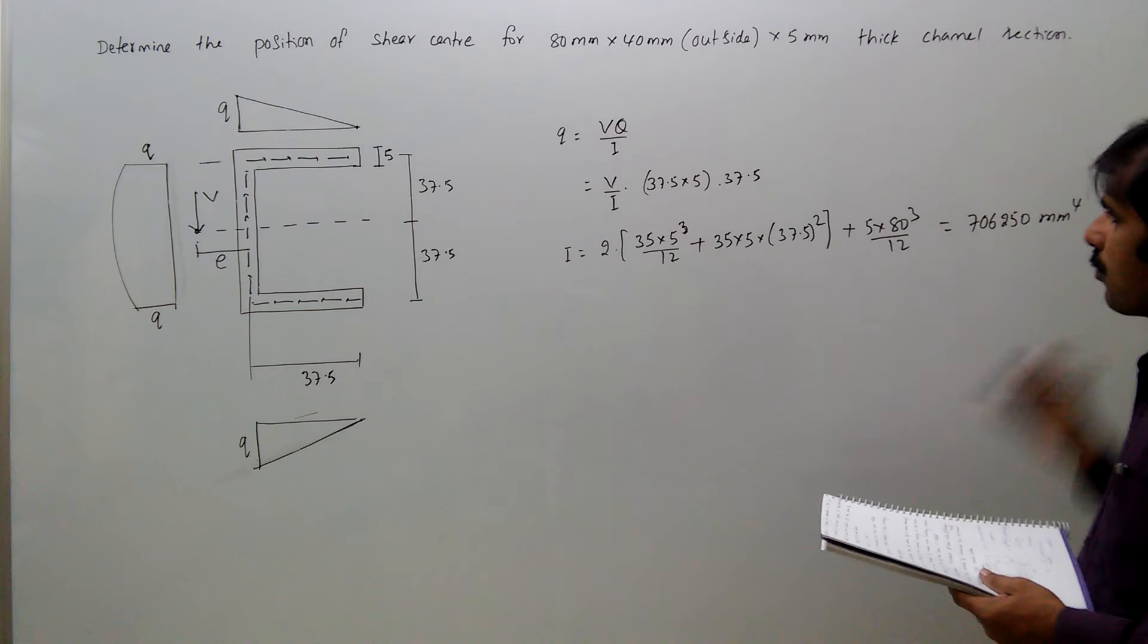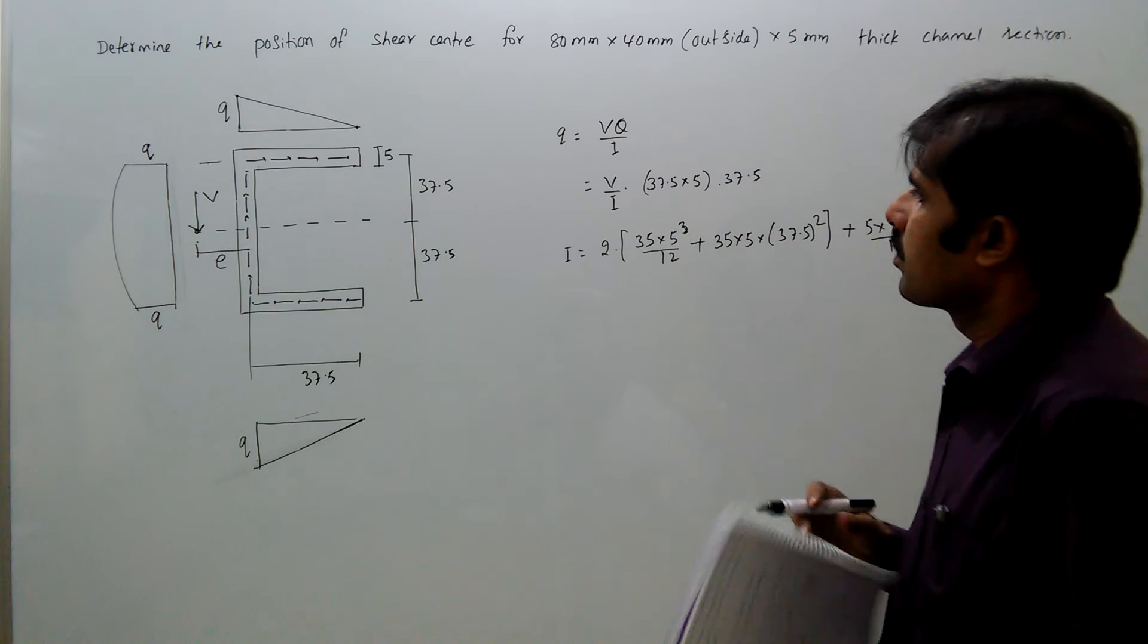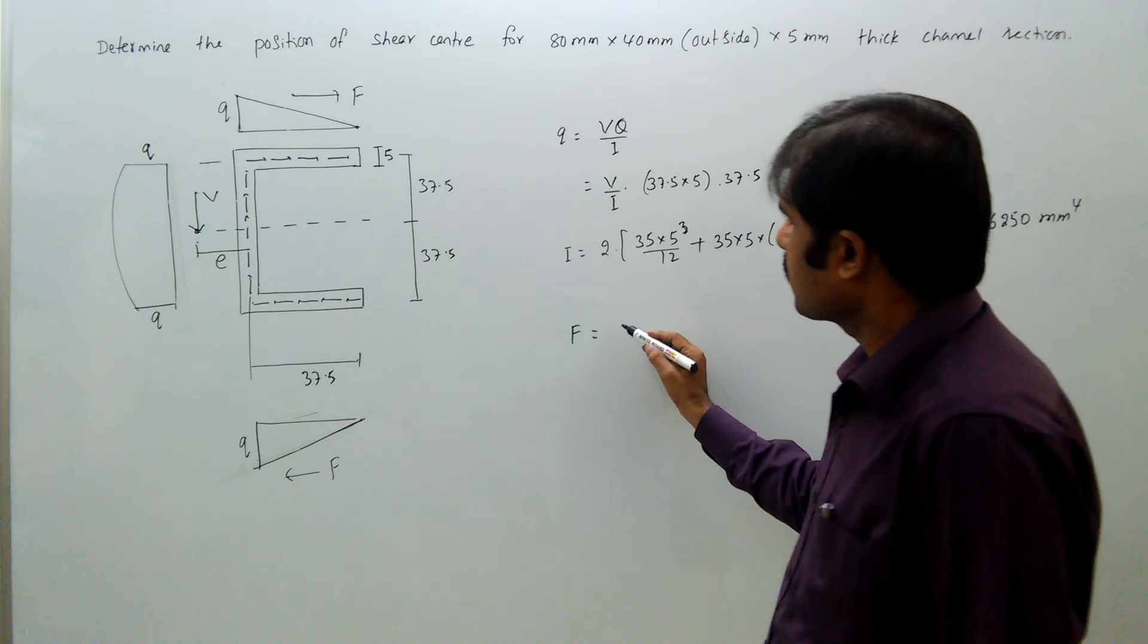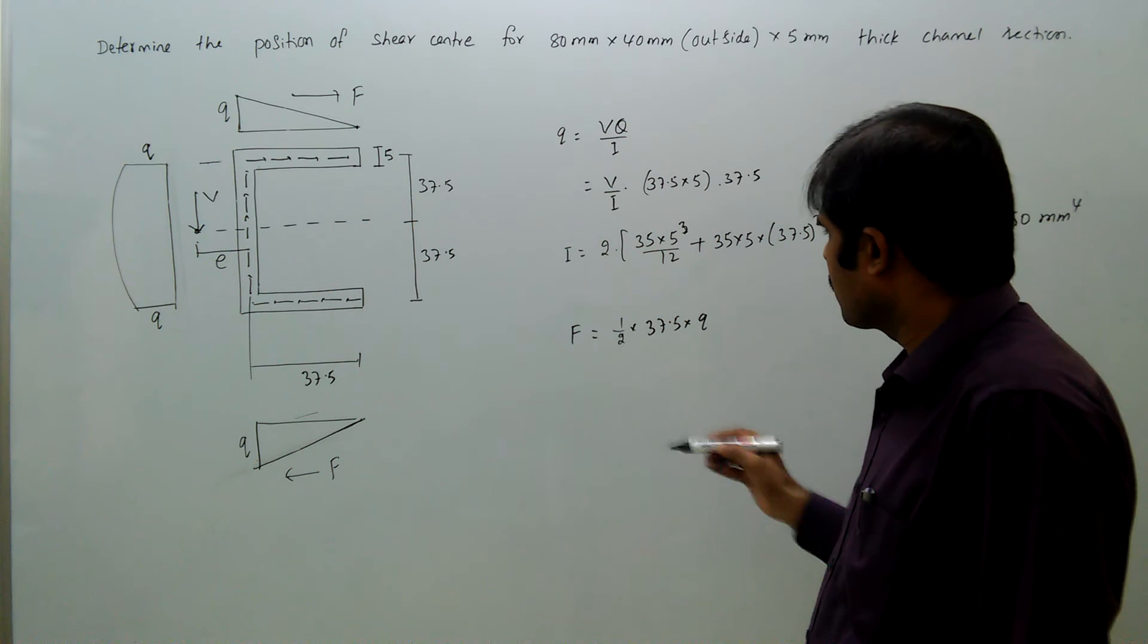Now what is the force F here? F equals—because this force and this force are both F—F equals area of the triangle, half into 37.5 into q.